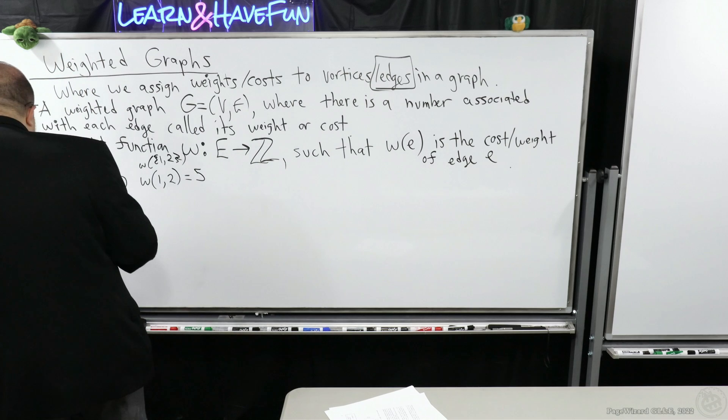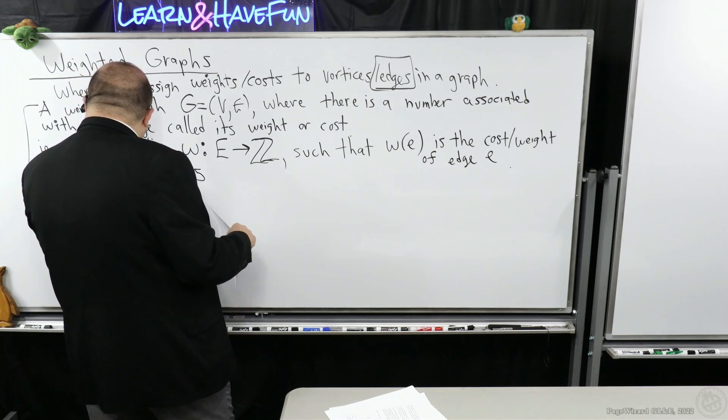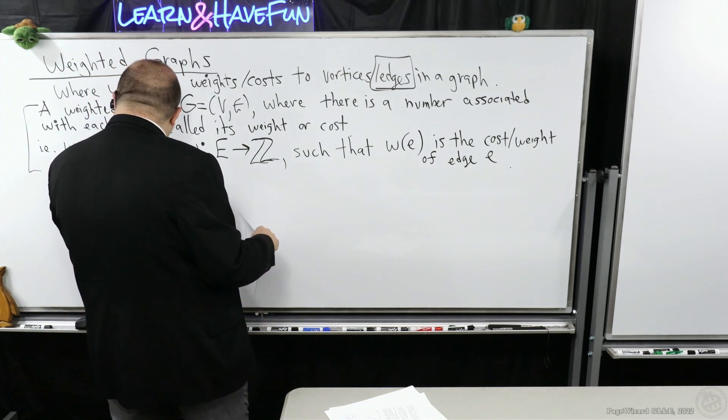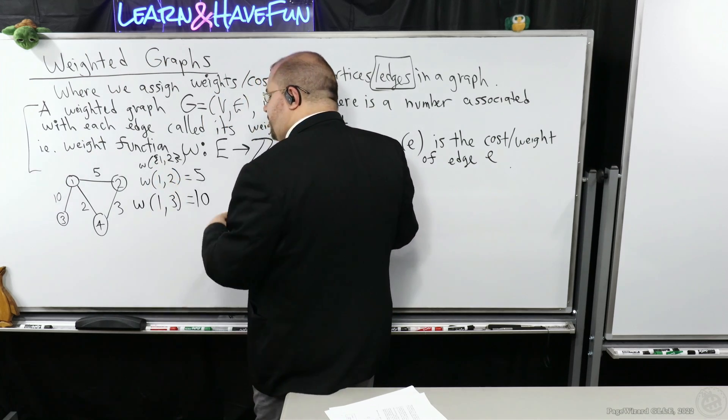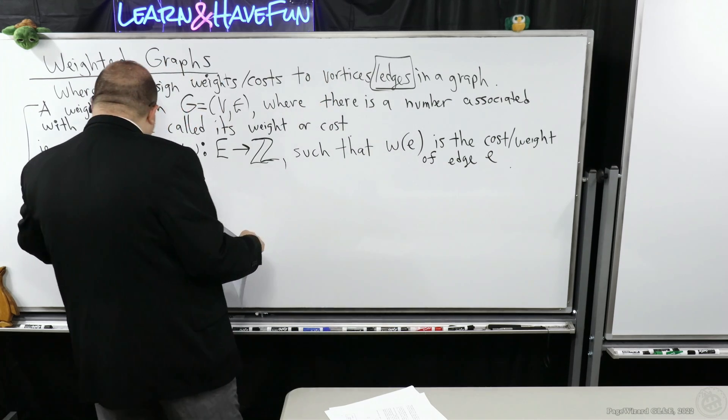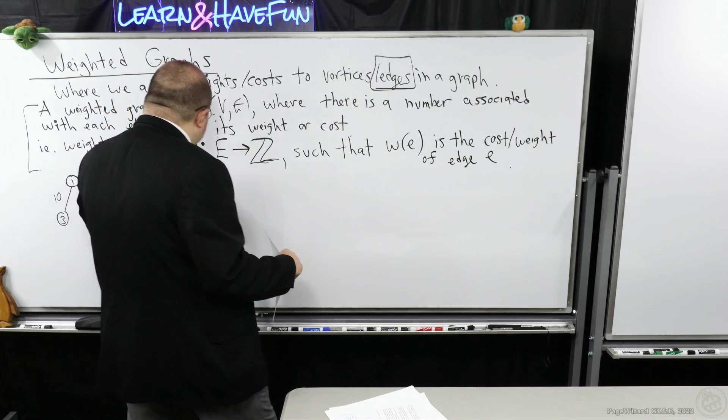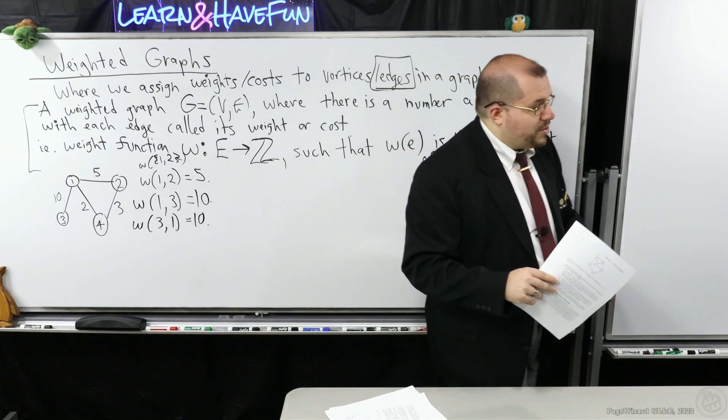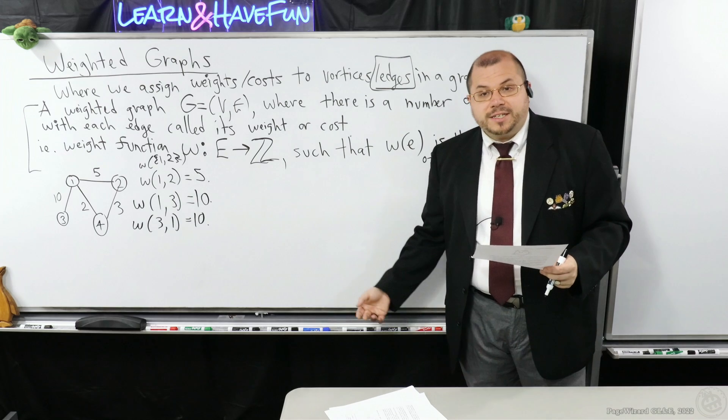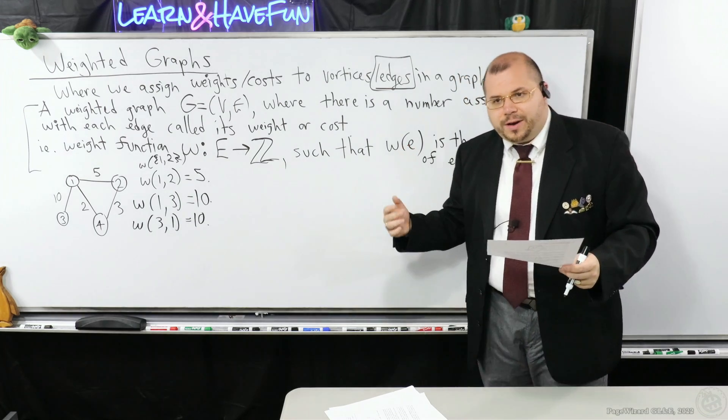Let's do another one just to make sure we're clear. Suppose the weight one, three, that's ten. This is an undirected graph, so the way I write the edges doesn't matter. It could be the weight of three, one. That's also ten.